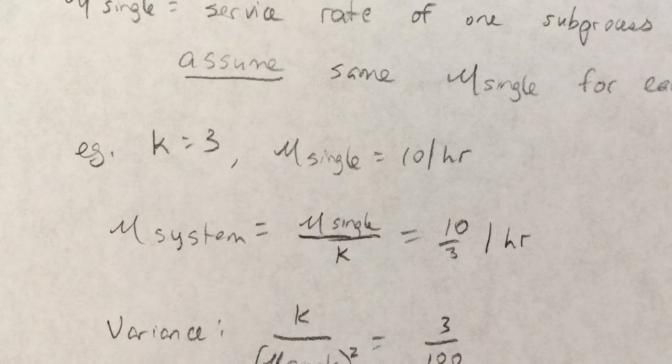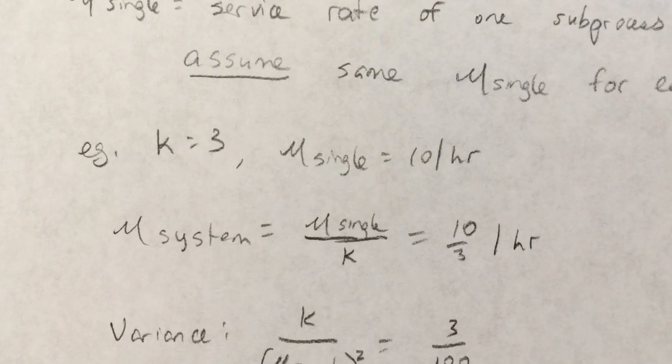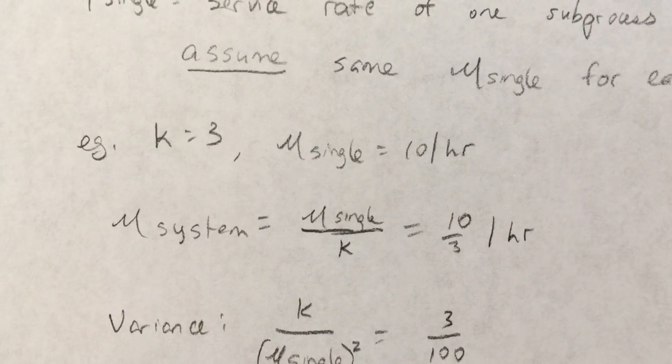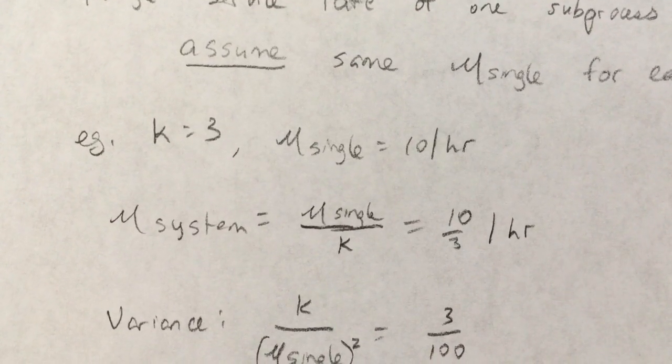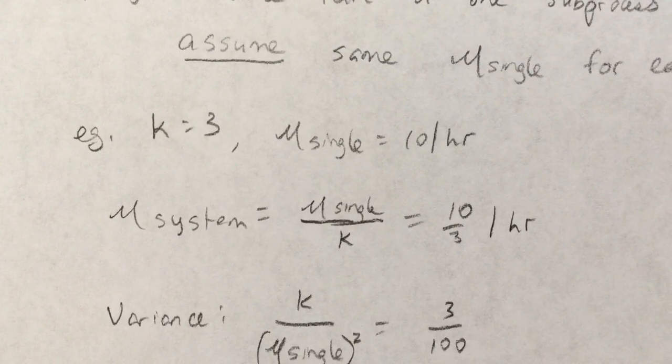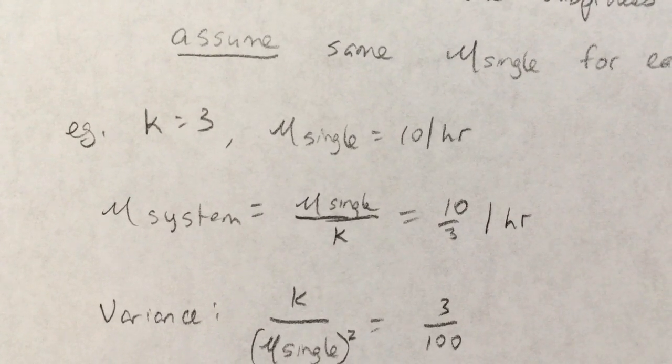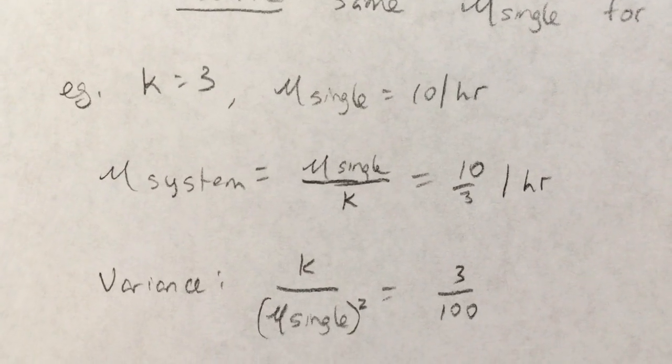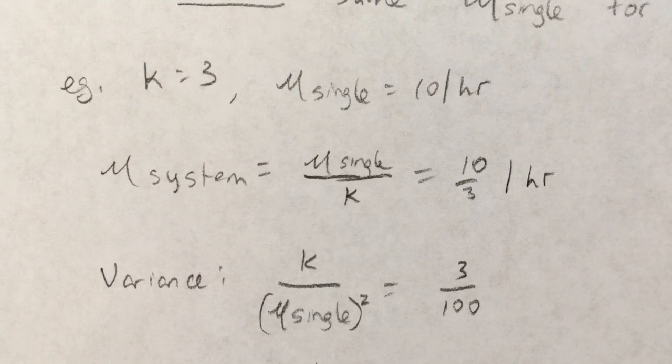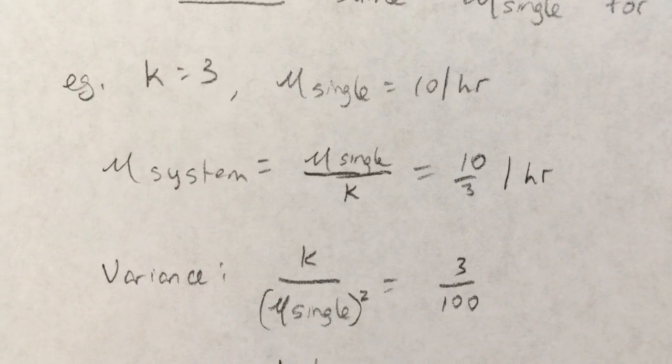And you're assuming that the next customer cannot start into the service process until the previous one exits. So it's not like Starbucks where you walk in and somebody takes your order and while yours is getting made they're taking the next order—this entire thing is sequential. The variance is just going to be K over mu_single squared. So in this case it's 3 over 100.